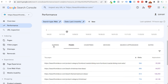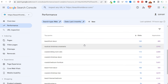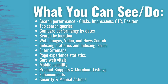If we scroll down here you can see your top pages and top search queries. You can click on countries to see which countries are driving the most clicks and impressions. You get a lot of data from Google Search Console about how your website is performing in the Google search results, all the way down to the specific queries driving clicks to your website. You can compare performance by date, search by different locations, and see web, image, video, and news search performance. You can view indexing statistics and any issues, submit your sitemap, check page experience statistics, core web vitals, mobile usability, product snippets and merchant listings, enhancements, and security and manual actions.